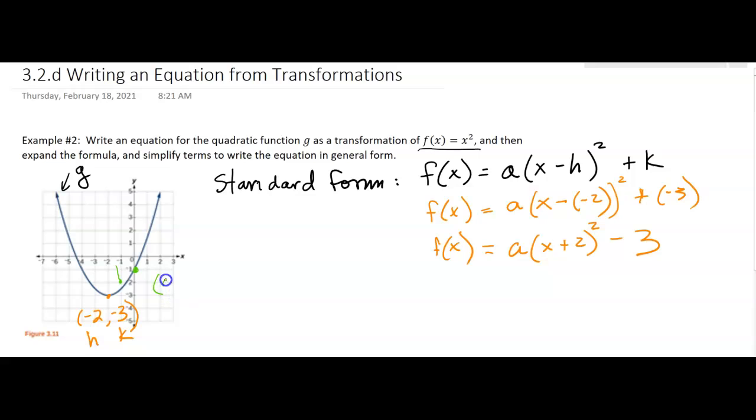0, negative 1. So what we're saying is, if we put in 0 for x, we should get negative 1 for y. This would be like my x, and this would be like my f(x). So that's what I'm going to do. I'm going to say negative 1 is equal to a times 0 plus 2 squared minus 3.